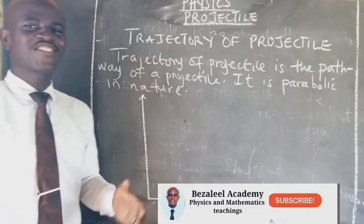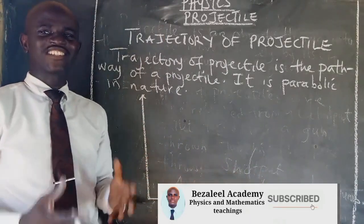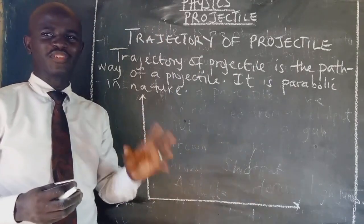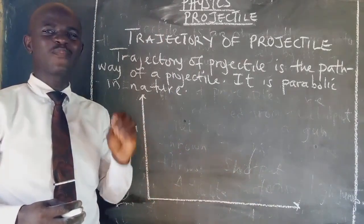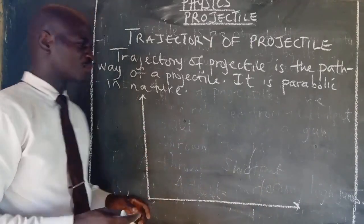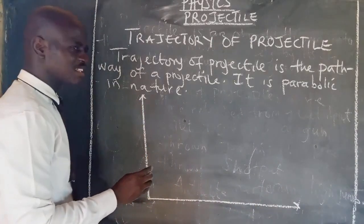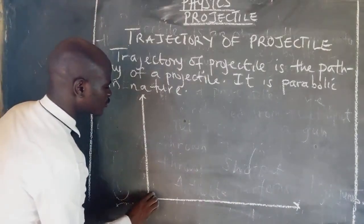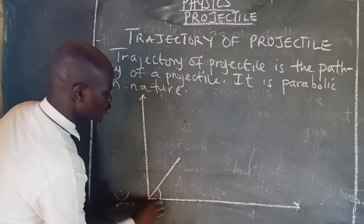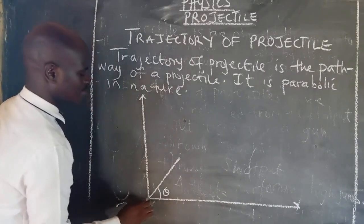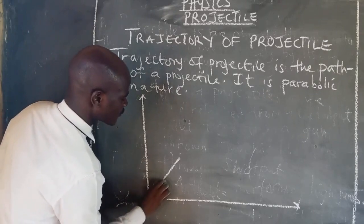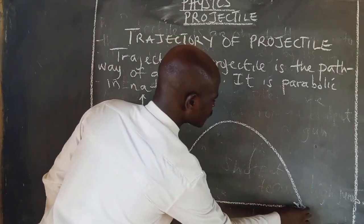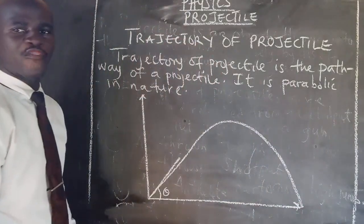Now, what is the trajectory of a projectile? The trajectory of a projectile simply means the pathway of a projectile, and it is parabolic in nature. For example, if an object is projected with an initial velocity u at a particular angle to the horizontal, the object will move and come back to the point of projection.